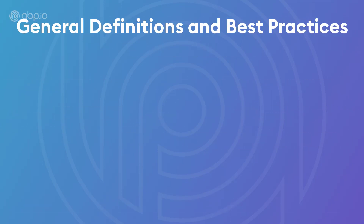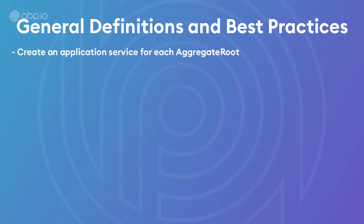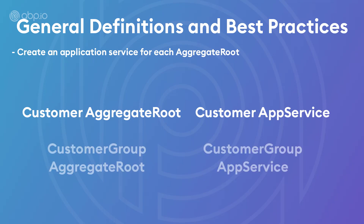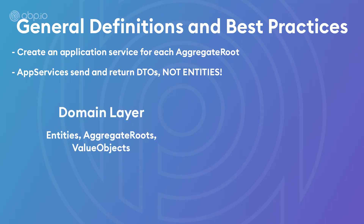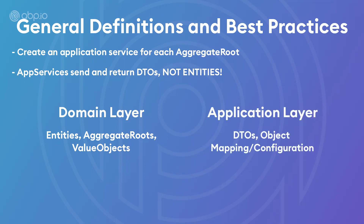Now for some general definitions and best practices. First, it's better to create an application service for each aggregate root — so we'd have a CustomerAppService for the customer aggregate root, and a CustomerGroupAppService for the customer group. App services send and return DTOs, not entities. The domain layer deals with entities, aggregate roots, and value objects, whereas the application layer deals with DTOs along with object mapping and configuration. So do not return an entity from an application service method — always use a DTO.